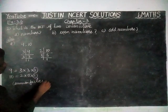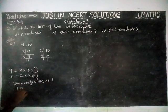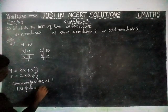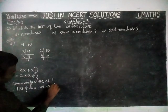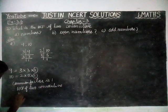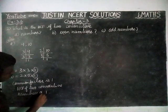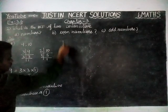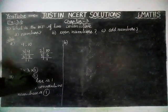The common factor is 1. Therefore, the HCF of 2 consecutive numbers is 1.